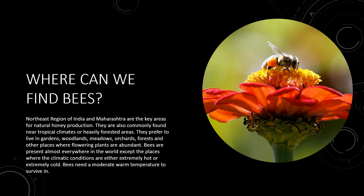Where can we find bees? The Northeast region of India and Maharashtra are the key areas for natural honey production. Bees are also commonly found near tropical climates or heavily forested areas. They prefer to live in gardens, woodlands, meadows, orchards, forests, and other places where flowering plants are abundant. Bees are present almost everywhere in the world except where the climate conditions are either extremely hot or extremely cold. Bees need a moderate warm temperature to survive.